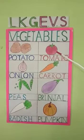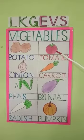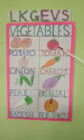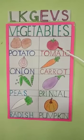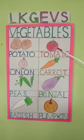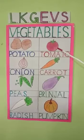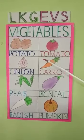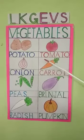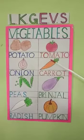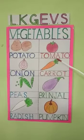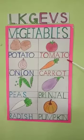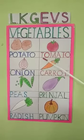Which vegetable is this? This is tomato. What is the color of tomato? Tomato is red in color. See the spelling: T O M A T O. Tomato.